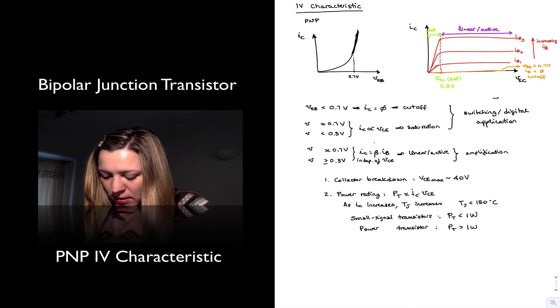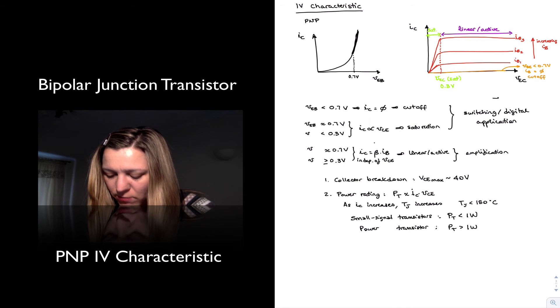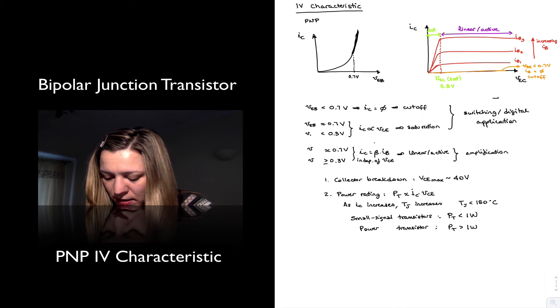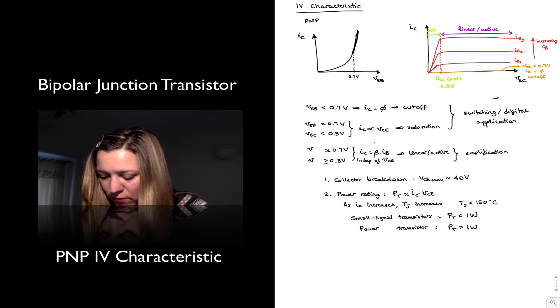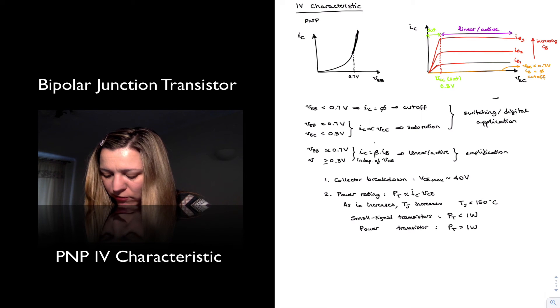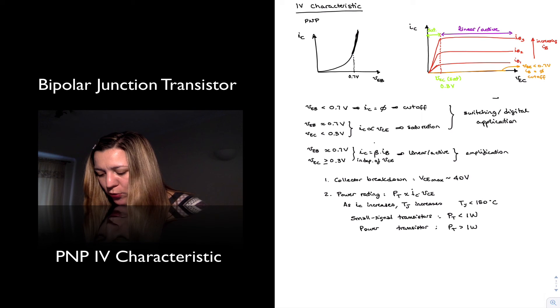For the saturation, we have VEB being forward biased, and VEC being smaller than the saturation voltage. And for the linear active region, we will have VEB being forward biased, and VEC being greater than the saturation voltage.